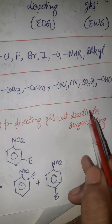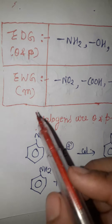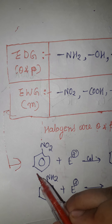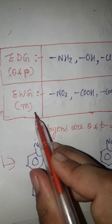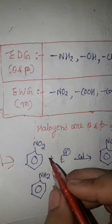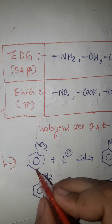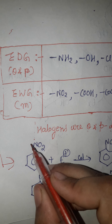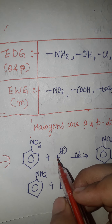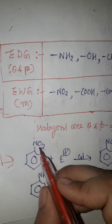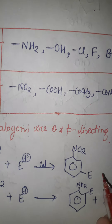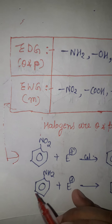There is one important exception: halogens are ortho and para directing groups as listed, but they deactivate the benzene ring. For example, in nitrobenzene, the nitro group is an electron withdrawing group. When an electrophile attacks, since nitro is an electron withdrawing group, it directs the electrophile to the meta position. So the electrophile attaches directly at the meta position.